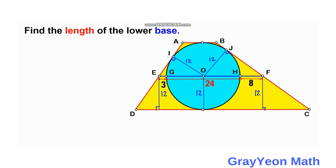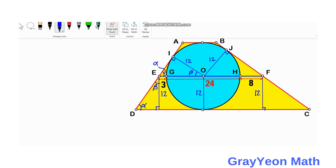Next, we consider the angles formed by the two parallel lines and the transversal AD. Parallel lines EF and CD are cut by transversal AD. We call one angle alpha, and the corresponding angle is also alpha, because when a parallel line is cut by a transversal these two angles are congruent. We call the complement angle beta, and its corresponding angle is also beta.